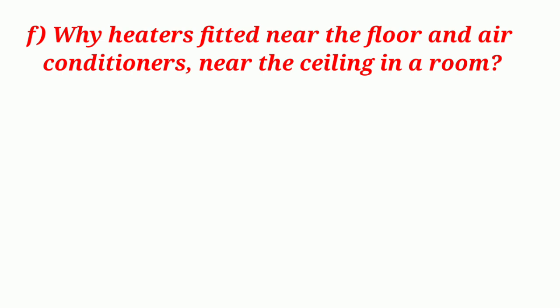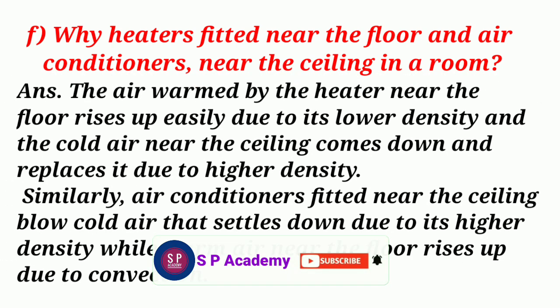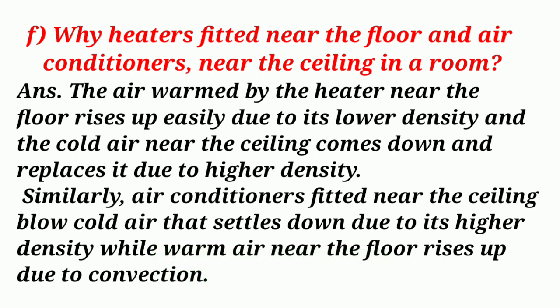Question F: Why are heaters fitted near the floor and air conditioners near the ceiling in a room? Answer: The air warmed by the heater near the floor rises up easily due to its lower density, and the cold air near the ceiling comes down and replaces it due to higher density. Similarly, air conditioners fitted near the ceiling blow cold air downwards due to its higher density, while warm air near the floor rises up due to convection.